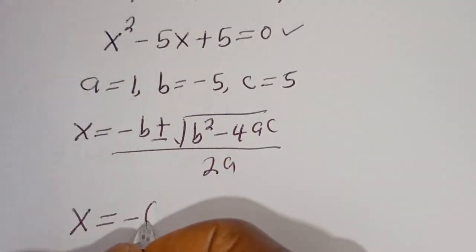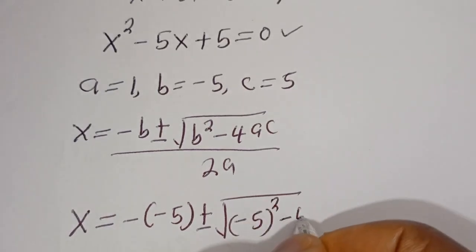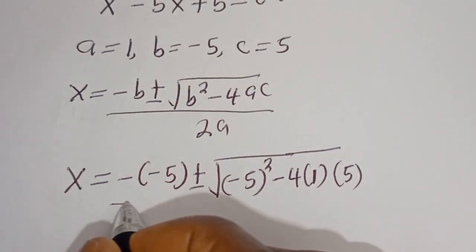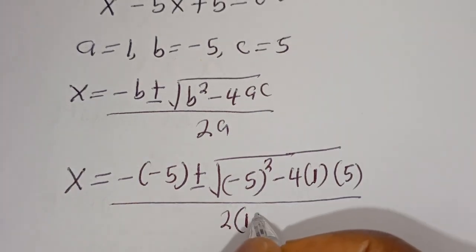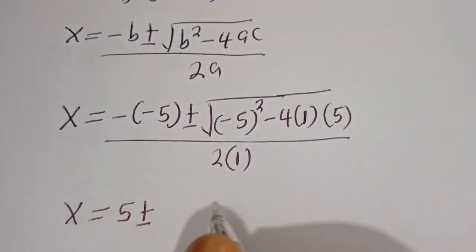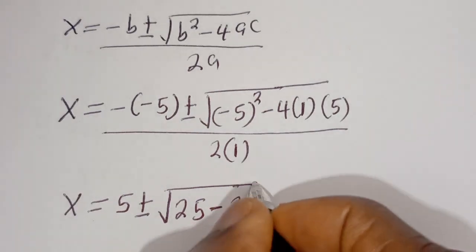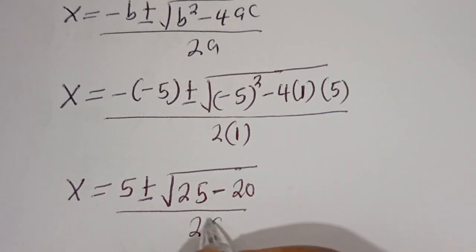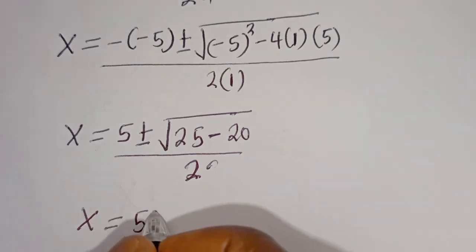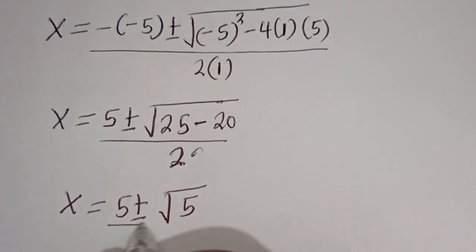Applying the quadratic formula x equals minus b plus or minus square root of b squared minus 4ac, all over 2a. Substituting: x equals 5 plus or minus square root of 25 minus 4 times 1 times 5, over 2. That simplifies to x equals 5 plus or minus square root of 25 minus 20, over 2, which is x equals 5 plus or minus square root of 5, over 2.